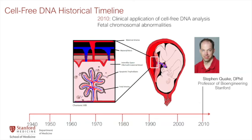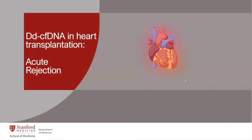In 2010, my colleague at Stanford, Stephen Quake, developed one of the first cell-free DNA assays for prenatal testing. This technology is now widely used — some of you may have had cell-free DNA assays during pregnancy to screen for fetal chromosomal abnormalities, largely replacing amniocentesis. Thinking about detecting fetal DNA in maternal blood, we started thinking about parallels with transplantation: perhaps you could detect donor DNA in the recipient's blood, and higher donor DNA levels could reflect injury to the graft.